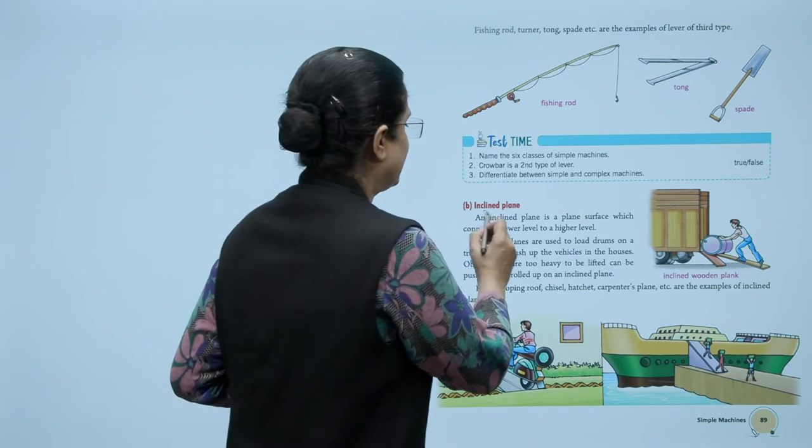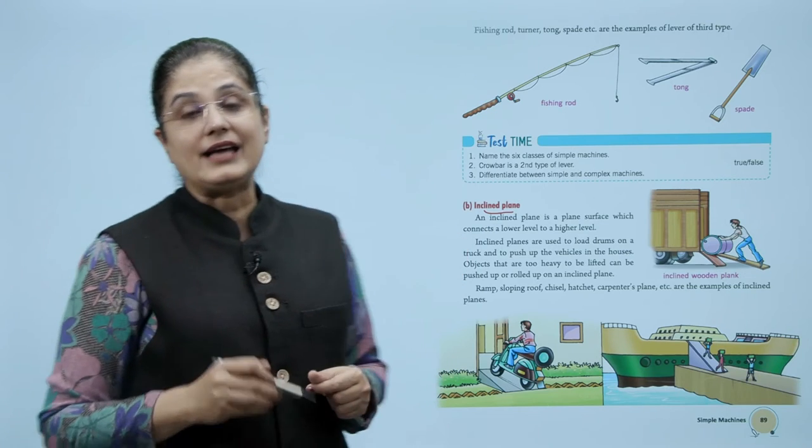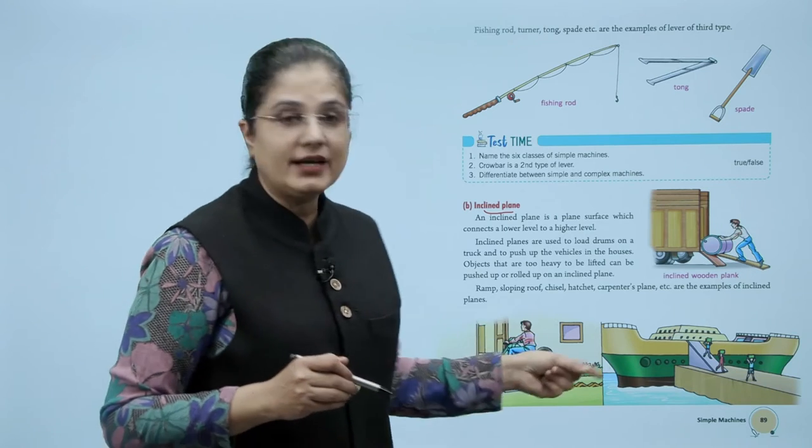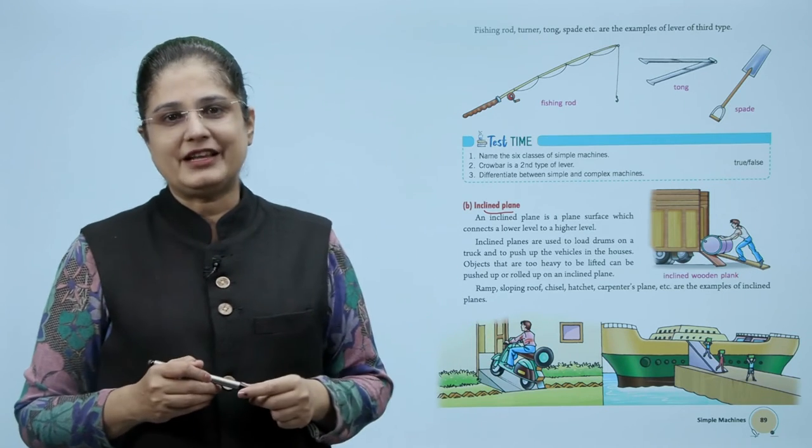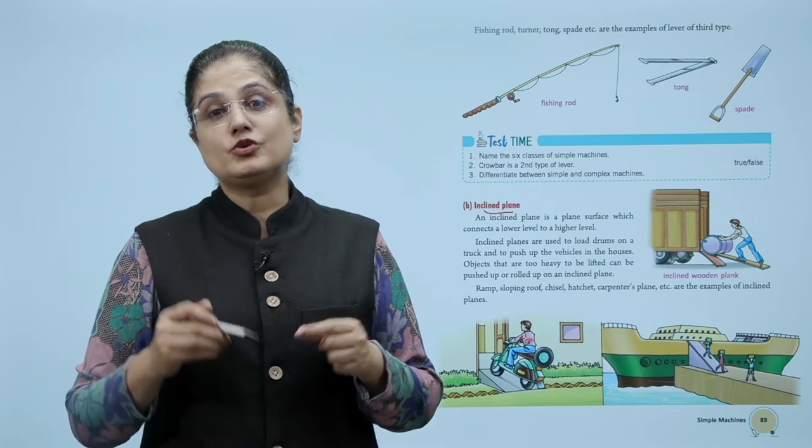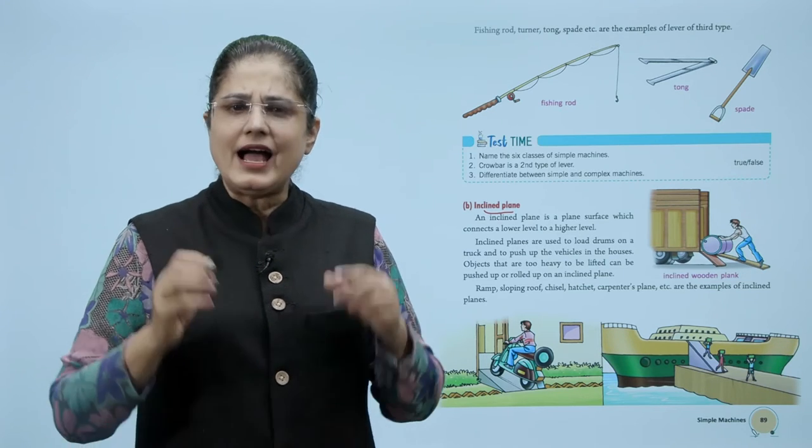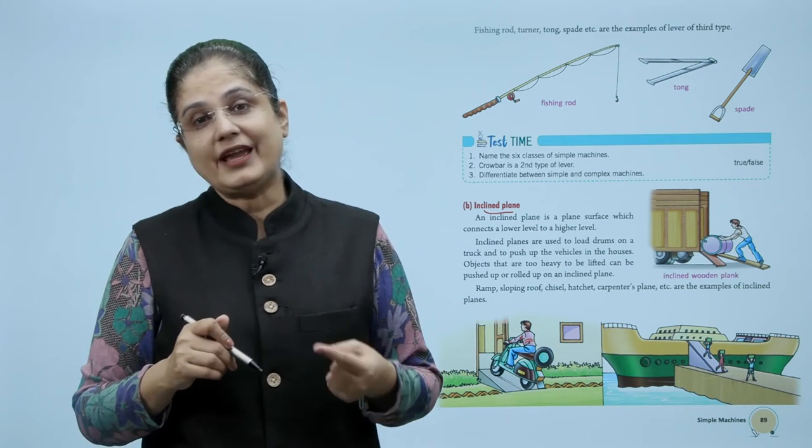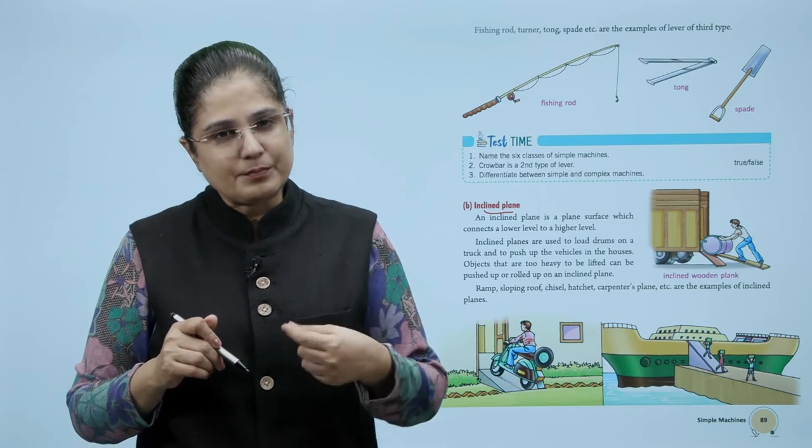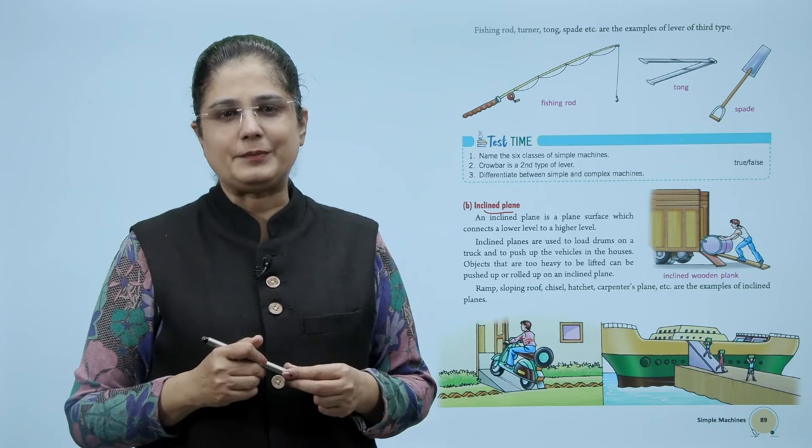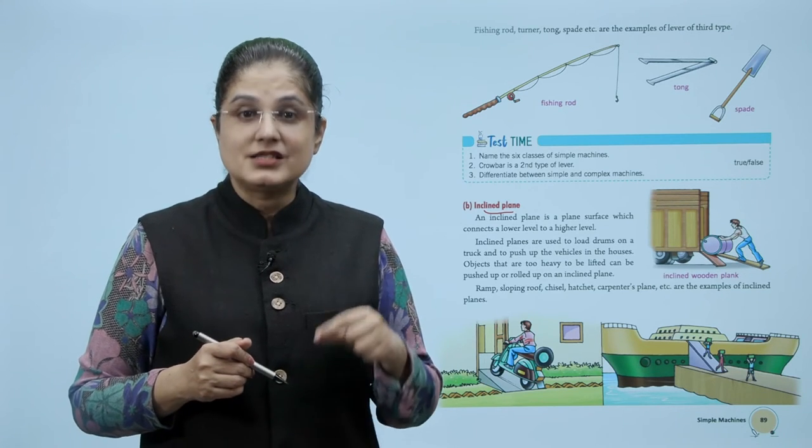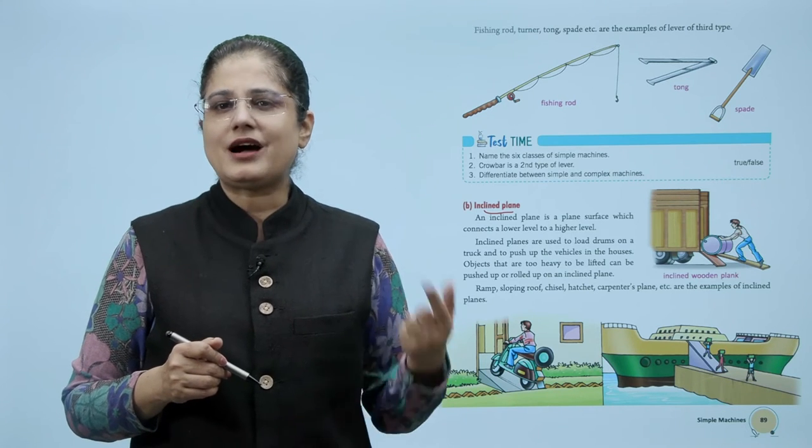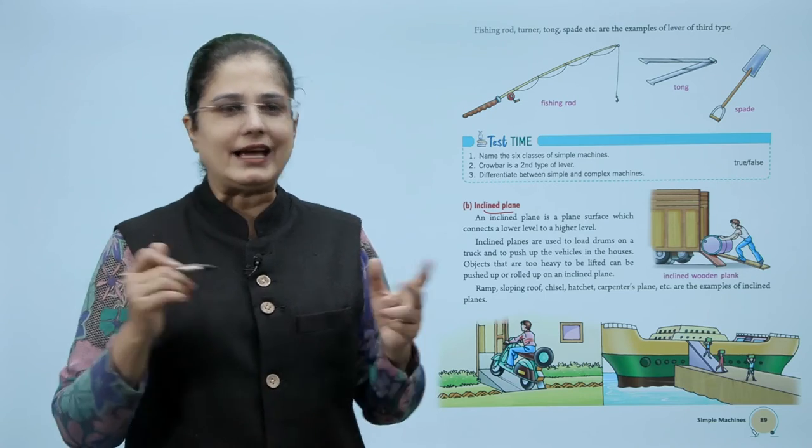Let us now look at the inclined plane. An inclined plane is a plane surface which connects a lower level to a higher level. Inclined planes are used to load drums on a truck and to push up vehicles. Objects that are too heavy to be lifted can be pushed up or rolled up on an inclined plane. Ramp, sloping roof, chisel, hatchet, and carpenter's plane are examples of inclined planes.